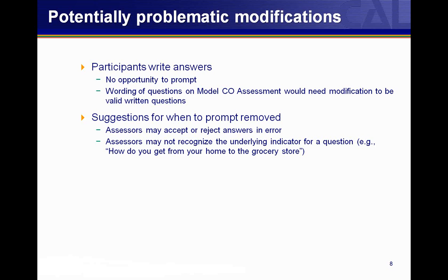In looking at the assessments agencies submitted this summer as part of the pilot, we noticed that some agencies removed the space for assessors to write down the answer, and in some cases assessors overly summarized the response. The reason we left space in the Model CO assessment to write down participants' responses is to allow agencies to have a review process to ensure scoring accuracy and consistency. This review process might entail going back over completed assessments to review how different people scored the same question, and to find out what are common errors that should be addressed in CO.